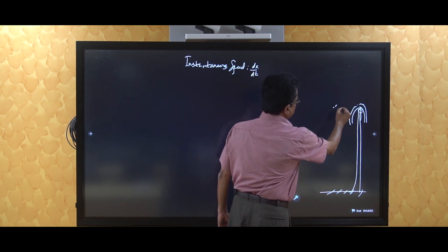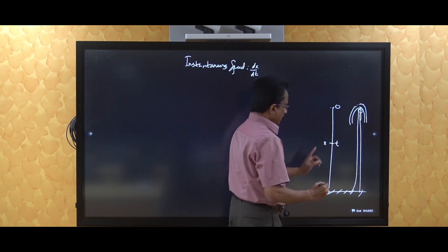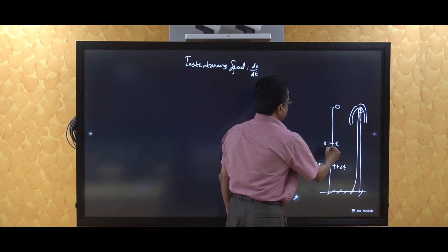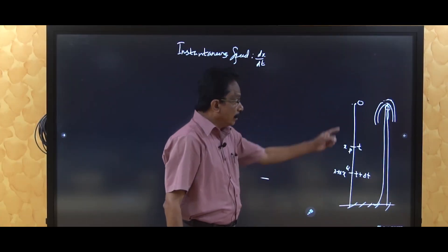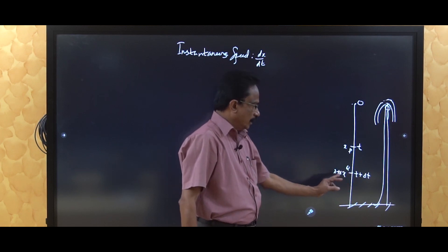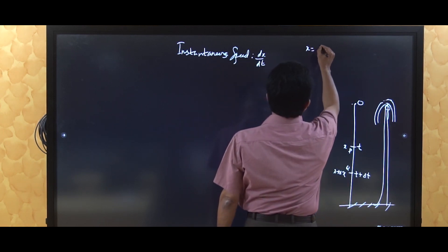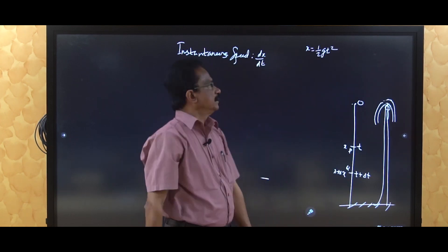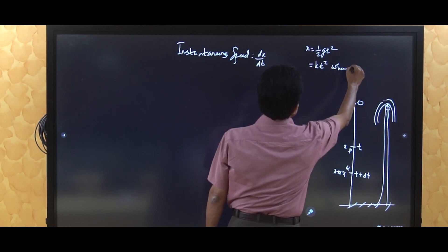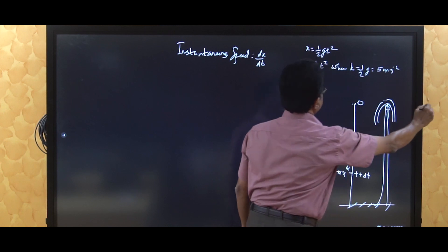To study this, we represent the initial position as particle O. At time t, the particle is at position x — this is called displacement. At time t plus delta t, the position is x plus delta x. We call position at time t as point p, and at time t plus delta t as point q. The equation for a freely falling body is x equals half g t squared. We measure displacement downward as positive, so we write x equals k t squared, where k equals half g, approximately 5 m per second squared.